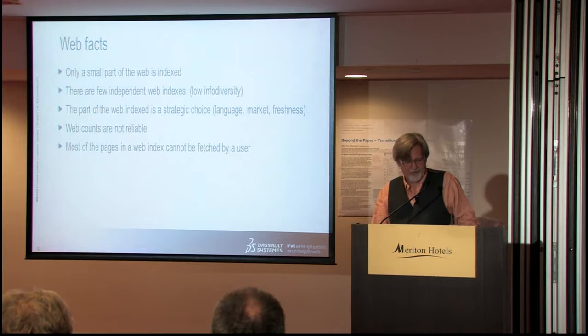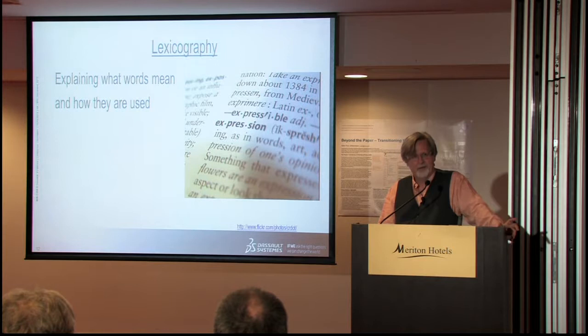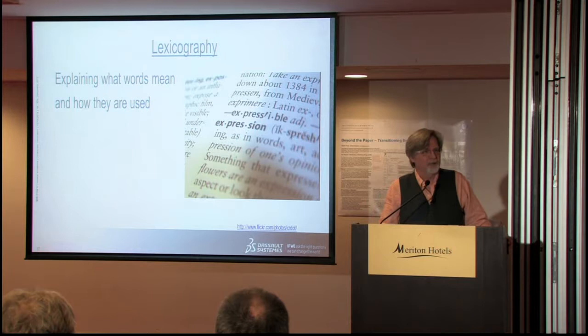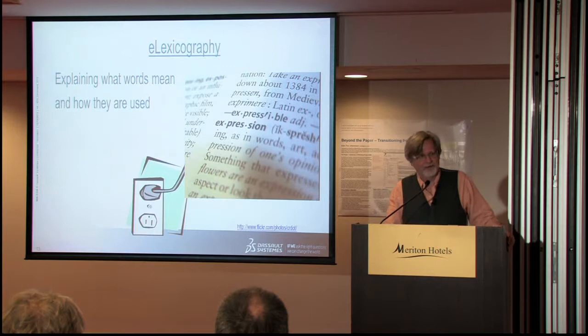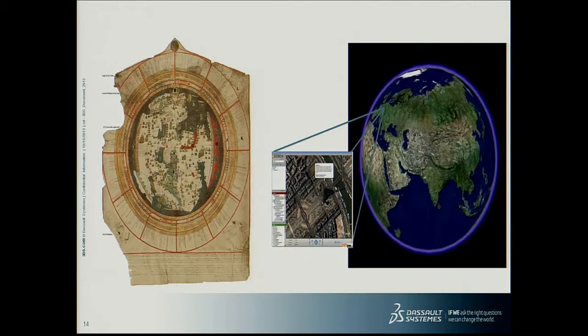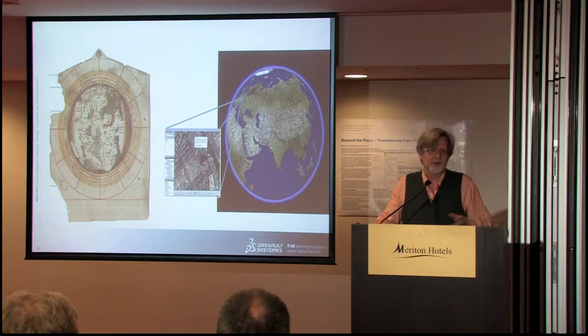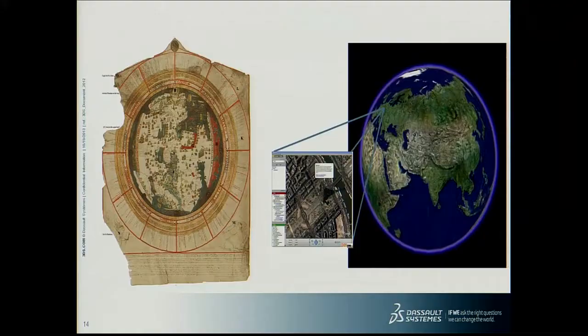Now I'll get to the bulk of my talk. I'm not a lexicographer, but here's the working definition I use: explaining what words mean and how they're used. E-lexicography is when that function is plugged into a computer or into the internet. Here's a map from the 15th century and then a map from Google Maps. What you're trying to do with lexicography is move from the first map to the second, where you can have much more information when you want to — you can look at information from far away or close up. This is the purpose of things like making maps of words or sketches of words.